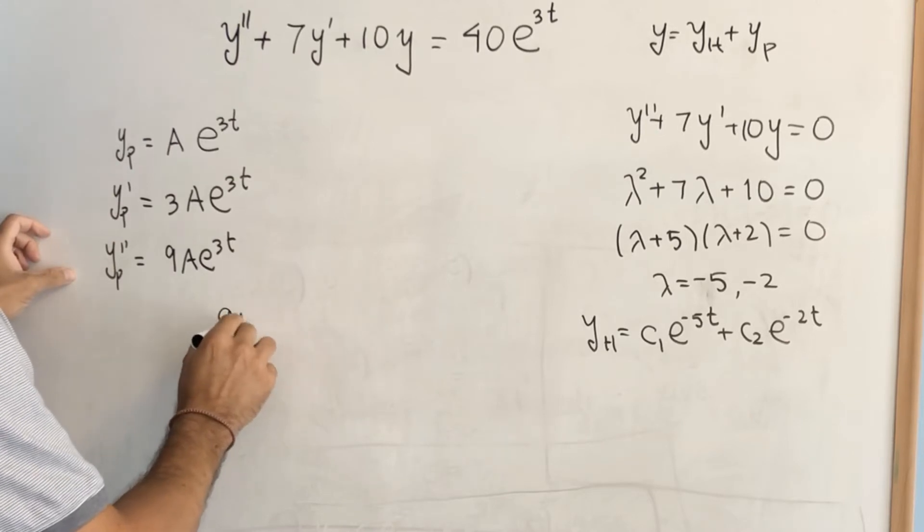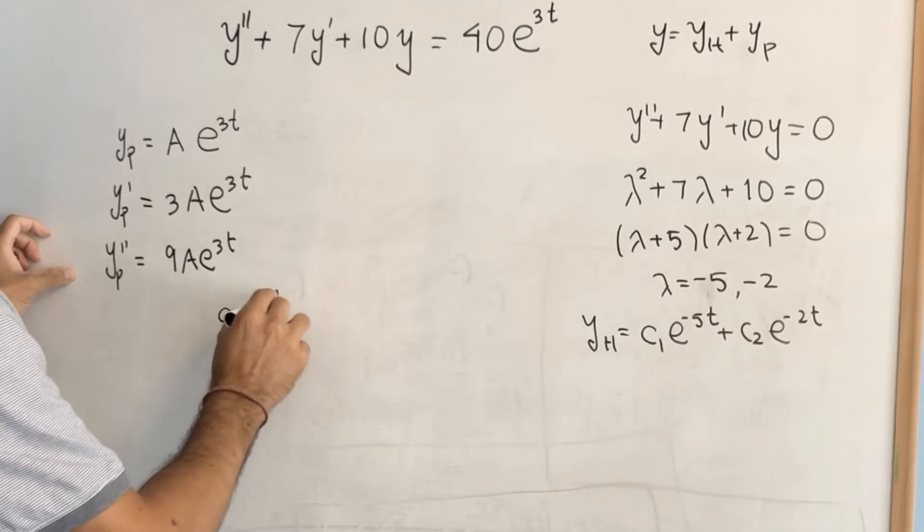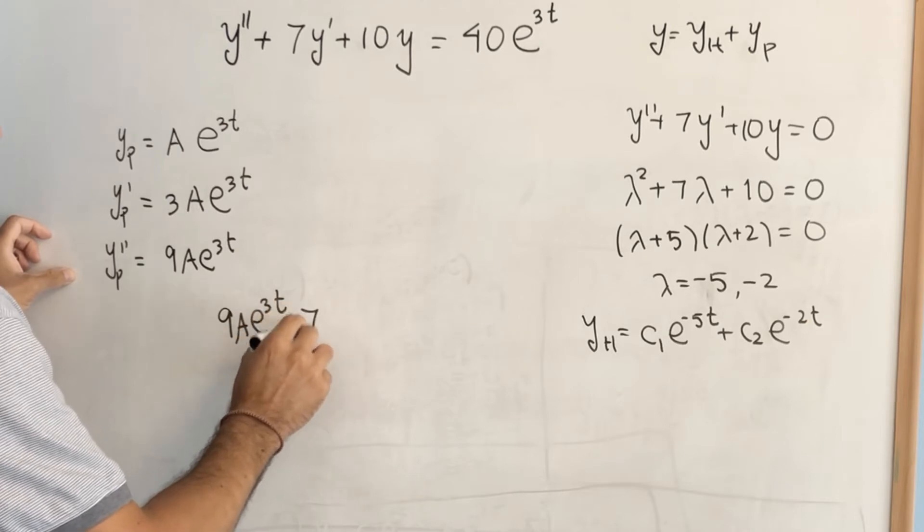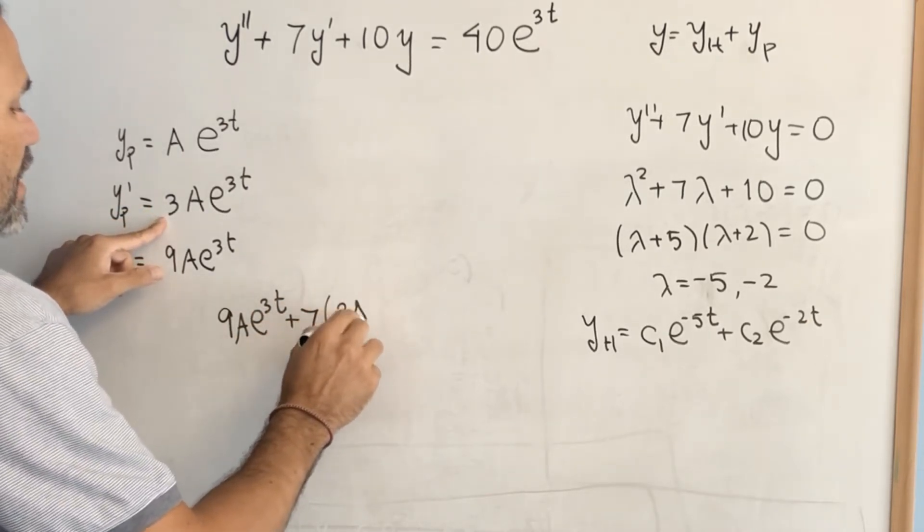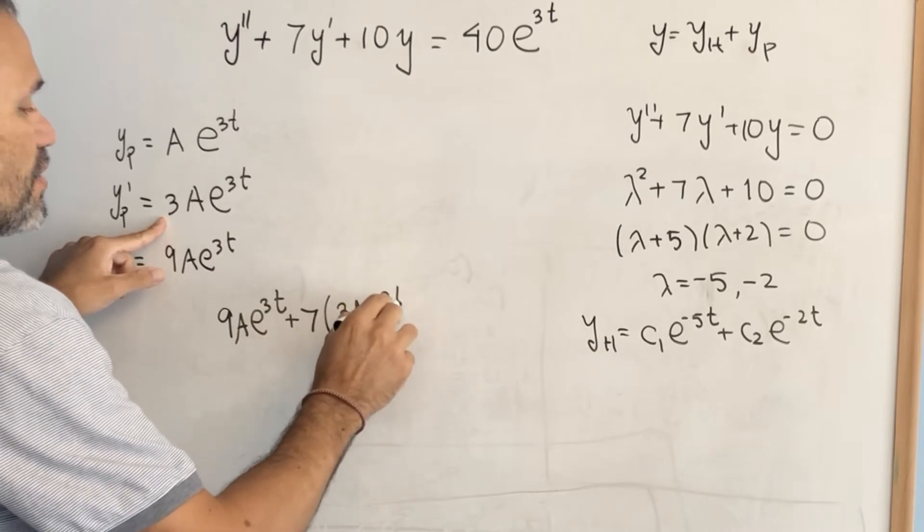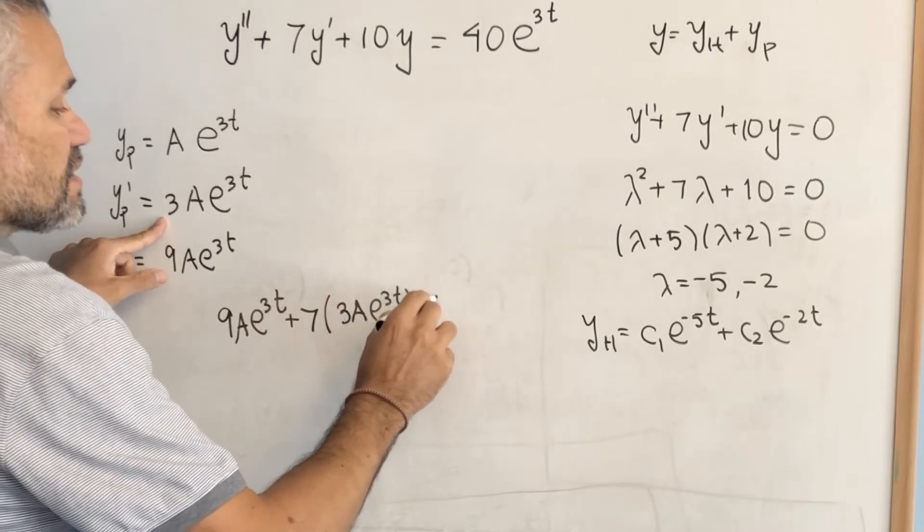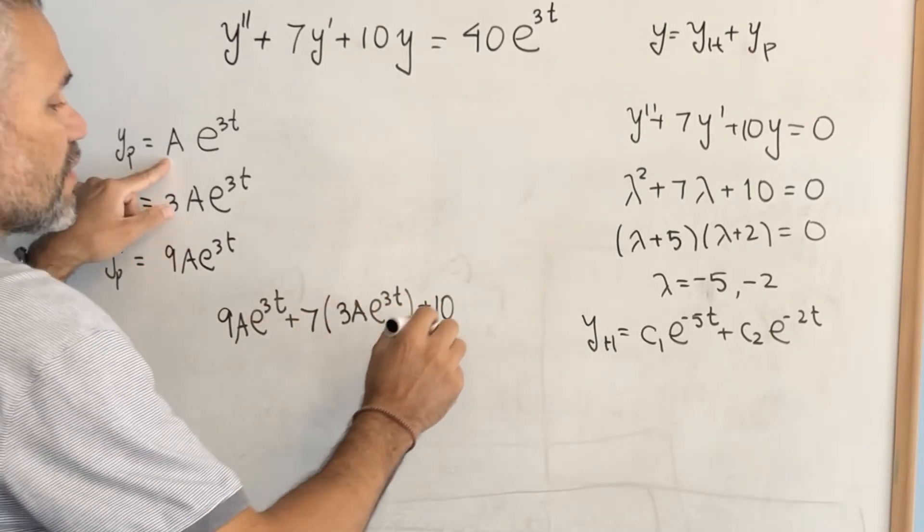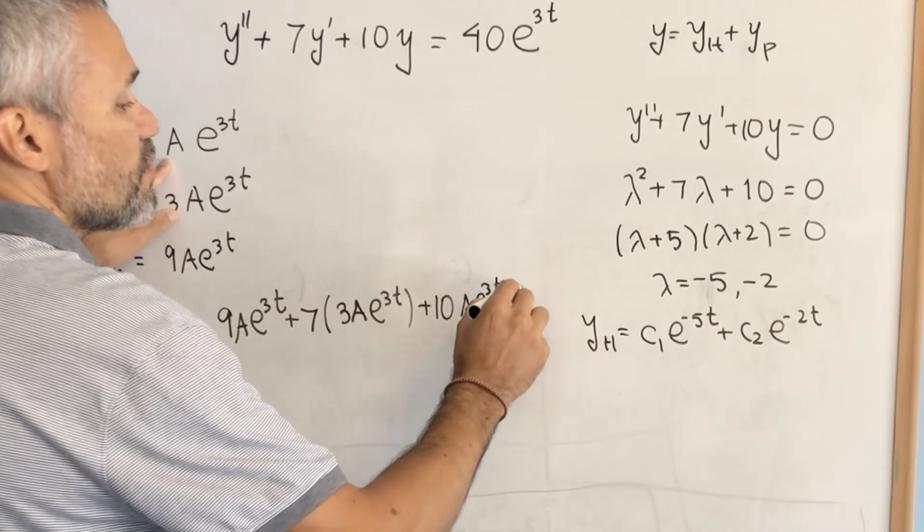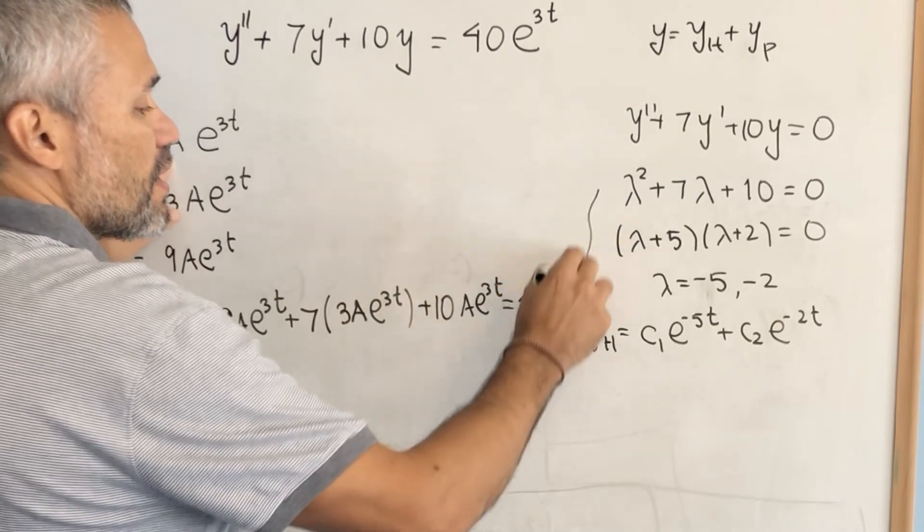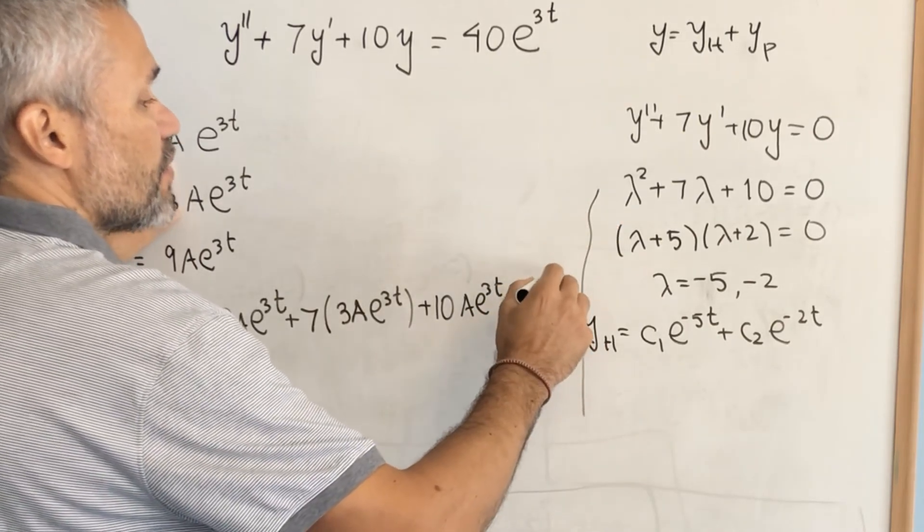And then, we get 9a e to the 3t plus 7 times the derivative, 7 times 3a e to the 3t, plus 10 times the original function, which is a e to the 3t. And we want this to be 40e to the 3t.